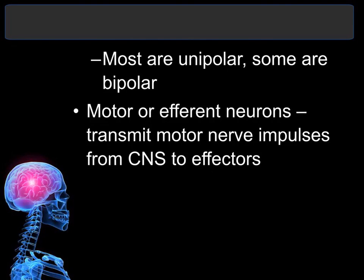Most sensory neurons are unipolar, but some can be bipolar. Motor or efferent neurons transmit information away from the central nervous system to the effector organs. Sensory or afferent neurons provide the input information about what is going on in the body, and motor or efferent neurons carry out any action that is necessary based on that information. Effectors are any organs or glands that carry out the instructions from the motor and efferent neurons coming from the brain and spinal cord.